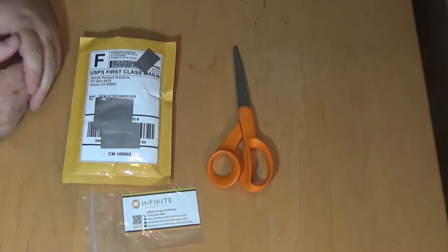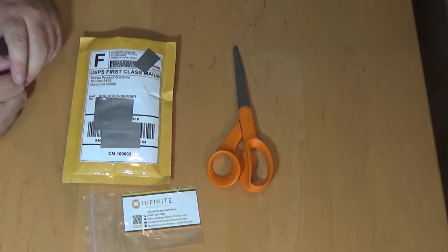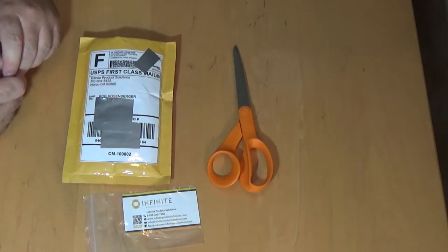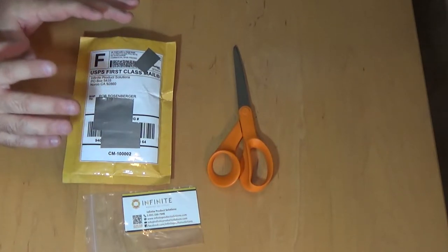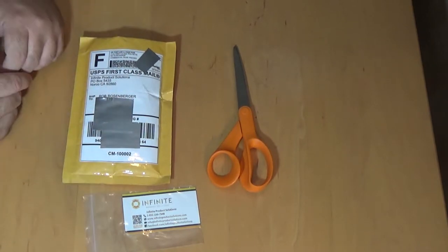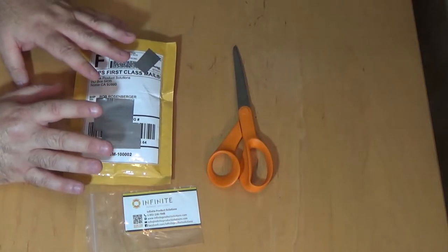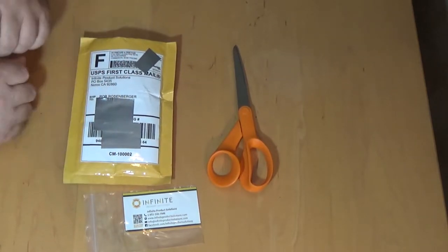Hey everybody, Rob Rosenberger here for Mostly22LR. A couple of weeks ago, I was dealing with the folks at Infinite Product Solutions, asking them about the Smith & Wesson M&P15-22 with the smooth barrel end. They said if you can give us some measurements, we can make you a custom barrel end for it. Although we didn't say anything about it, I'm sure they want me to test this, and if I like it, they'll probably put it into production.